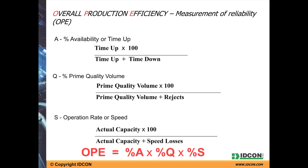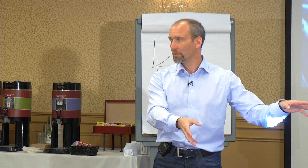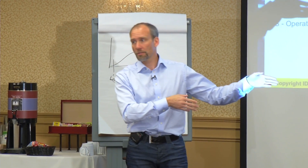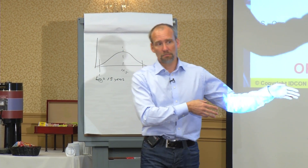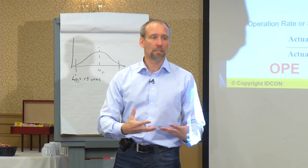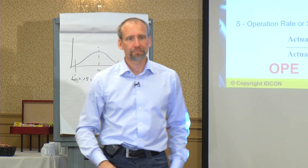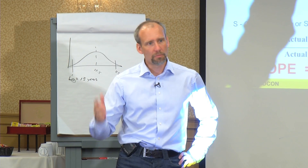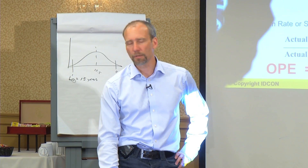You can talk about exactly how to measure this and what you're allowed to take away. Some people take away the major shutdowns, but I don't think we should do that — because if you take away the major shutdowns, it's like taking away the pit stop from NASCAR. If you have a five-day shutdown and your competitors have three days, they're doing better than you. So we have to take that into account. Economic downtime we may not be able to affect, so that's a little different.